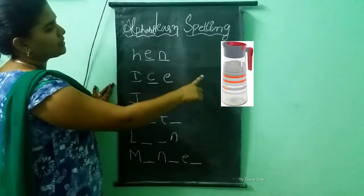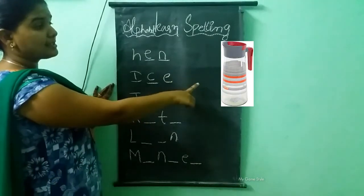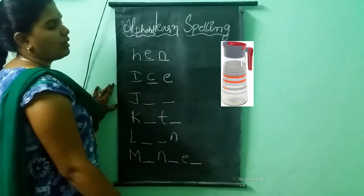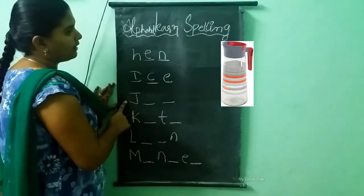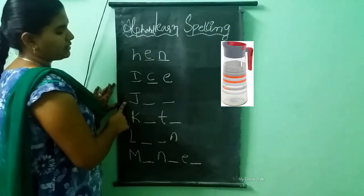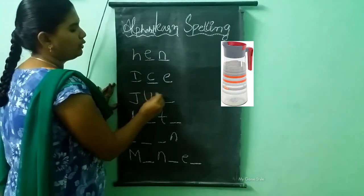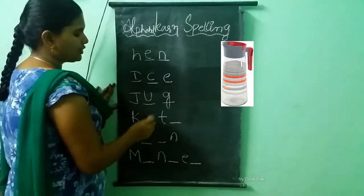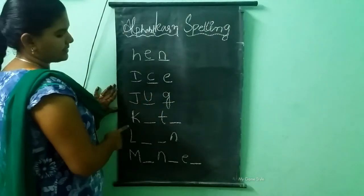What picture is this? This is a jug. What is the spelling of jug? J-U-G. Next.